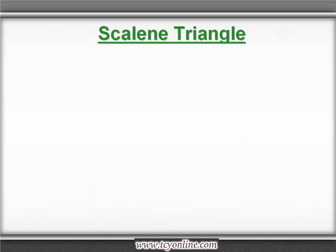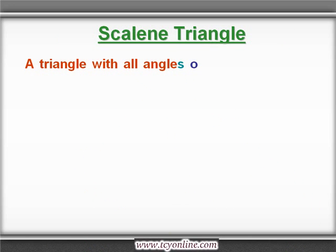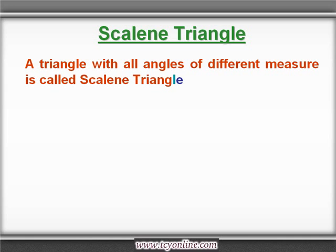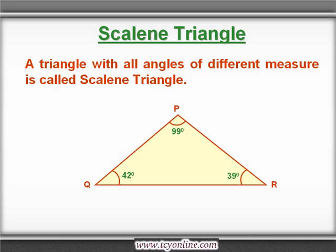Let's start with the scalene triangle. A scalene triangle is one in which the measure of all three angles is different. See in the picture — in triangle PQR, the measure of angle P is 99 degrees, angle Q is 42 degrees, and angle R is 39 degrees, so all three angles are different in measure. One more point to remember: in a scalene triangle, the measure of all three sides is also different.